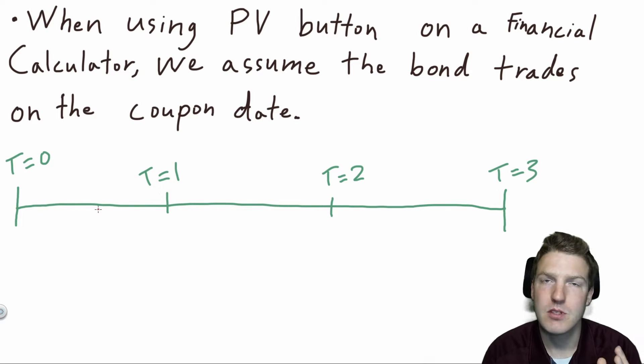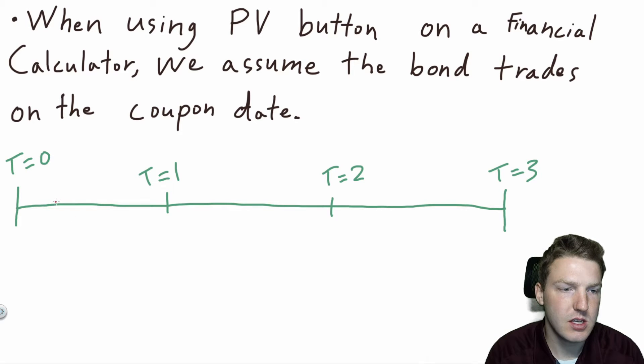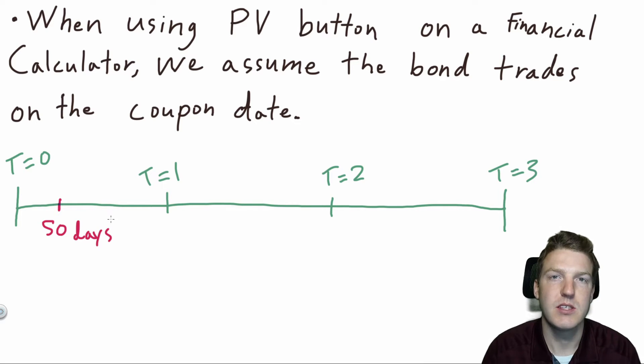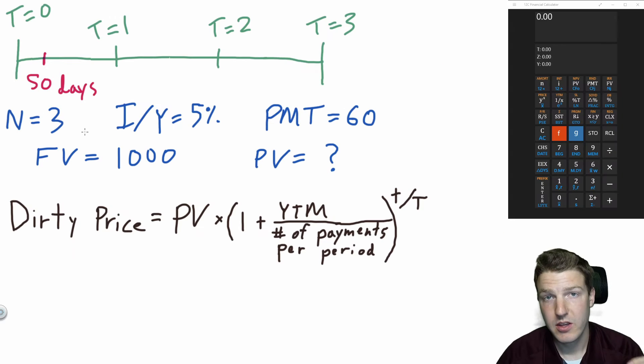So what happens if the bond trades here? It was initiated at T equals zero, and then 50 days into the first year is when it trades. How would we value the bond and get its dirty price at that point? Now let's calculate the dirty price of the example bond with the parameters that I've listed here.